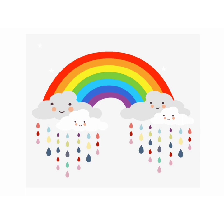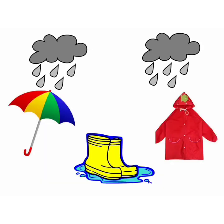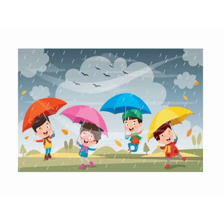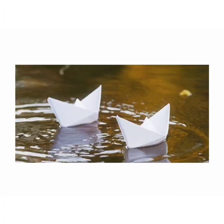We see a beautiful rainbow in the sky in monsoon season. Rainbow has seven colors in it. We get water from rain. We use an umbrella, rain coat and gum boots in the rainy season. Children like to play in the rain. They jump into the puddles and sail paper boats in the puddles. Puddles are small pools of water found on the ground due to heavy rain.